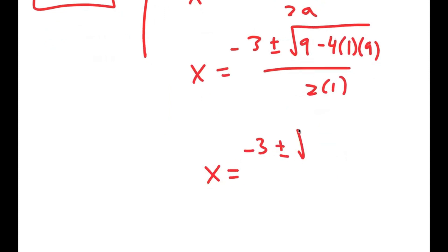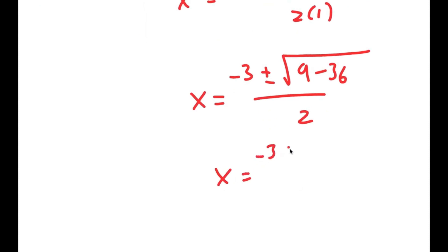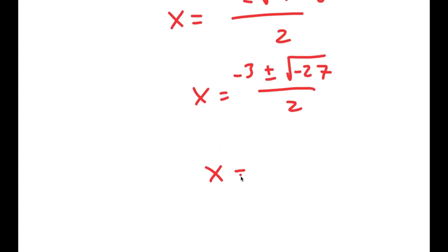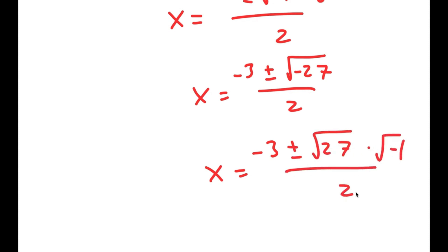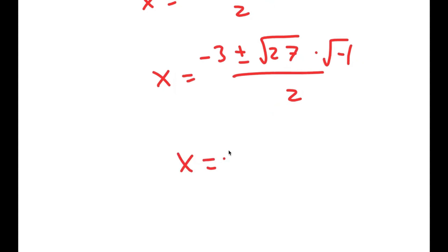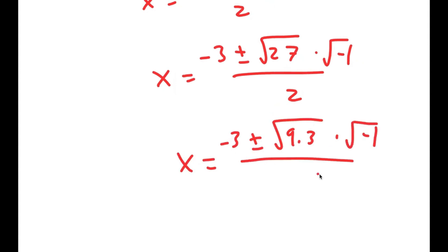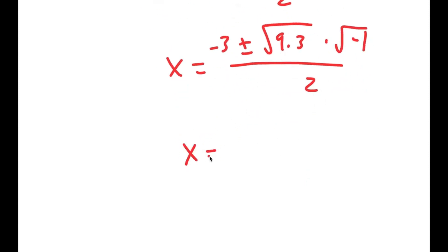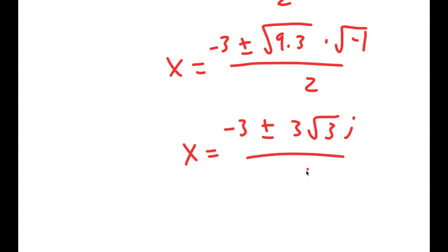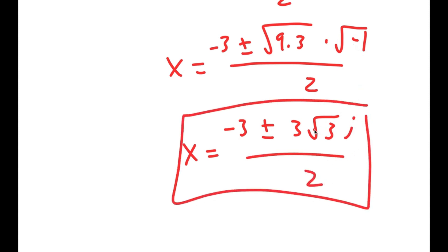And this turns into negative 3 plus or minus the square root of 9 minus 36 over 2, which is equal to negative 3 plus or minus the square root of negative 27 over 2, which is equal to negative 3 plus or minus the square root of 27 times negative 1, over 2. Now 27 is the same thing as 9 times 3, and the square root of 9 is 3. So x is equal to negative 3 plus or minus 3 root 3 times i, since the square root of negative 1 is i. So these are two more solutions to this equation.